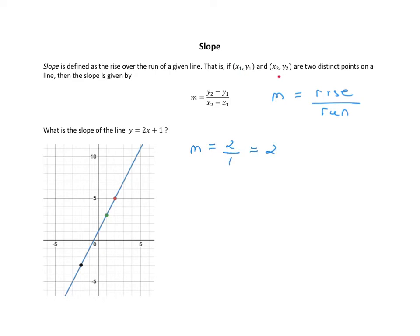You can use any two points to figure out what the slope of the line is. So you could have used these two points. The rise in this case would be 1, 2, 3, 4, 5, 6, and the run is 1, 2, 3. So if I use those two points, the slope is 6 over 3, and that still reduces to 2.